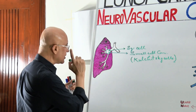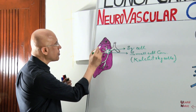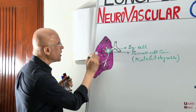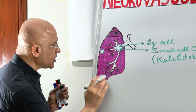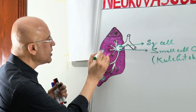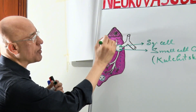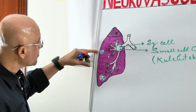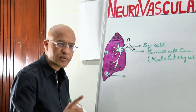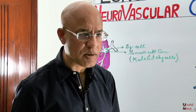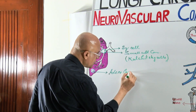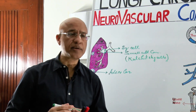Then there are lung cancers which are more abundantly present in the periphery of the lung. These peripheral tumours, most commonly histologically, are adenocarcinoma. The cell of origin for adenocarcinoma is type 2 pneumocytes in the alveoli.